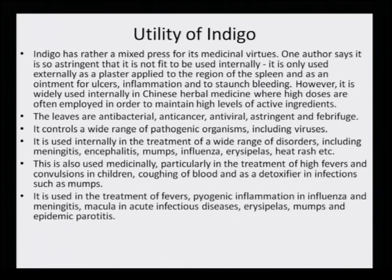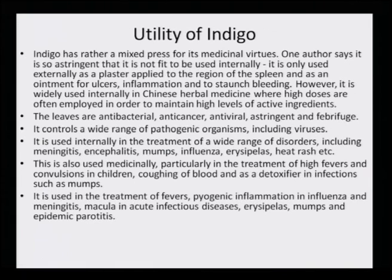Indigo has rather a mixed press for its medicinal virtues. One author says it is so astringent that it is not fit to be used internally, and is only used externally as a plaster applied to the region of the spleen and as an ointment for ulcers, inflammation and to staunch bleeding. However, it is widely used internally in Chinese herbal medicine therapy. Chinese have a very enriching traditional herbal therapy, where high doses are often employed to maintain high levels of active ingredients. So indigo was applied in both the Indian Ayurvedic and Chinese herbal medicine systems.